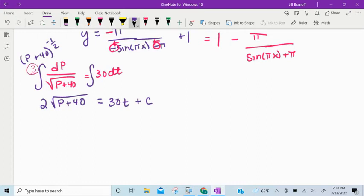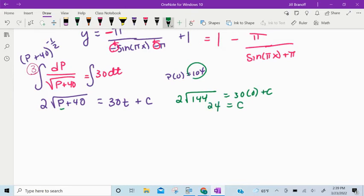Let's see about finding that c. P of 0 is 104. See how nicely that's going to work out? 2 times the square root of, if you put 104 in for p, you get 144 equals 30 times 0 plus c. So c is 2 times 12, c is 24.